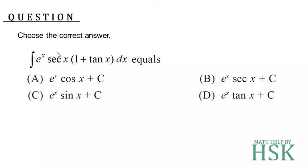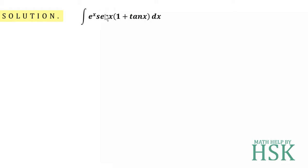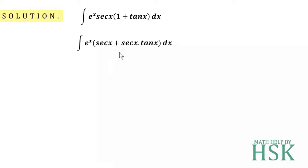To solve this question, I see that I have two functions: first is e to the power of x, and second is these trigonometrical terms. I'm going to multiply sec x into the bracket, so I get e to the power of x into sec x plus sec x into tan x.